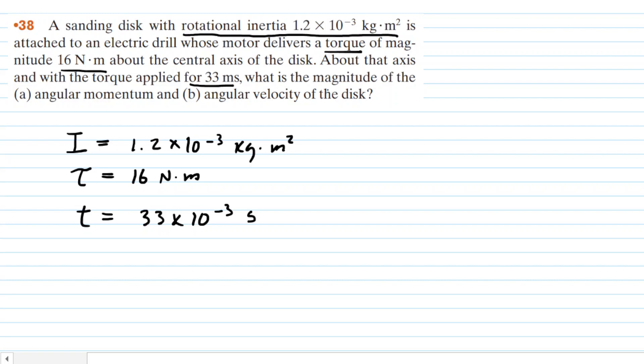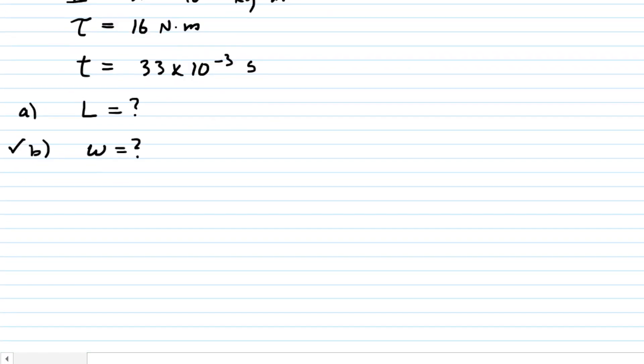The first part of the question asks for the magnitude of the angular momentum. In part A, we're looking to calculate uppercase L. In part B, we're asked to calculate the angular velocity, which is symbolized by omega. It turns out we're going to solve part B first, and then go back and solve part A.